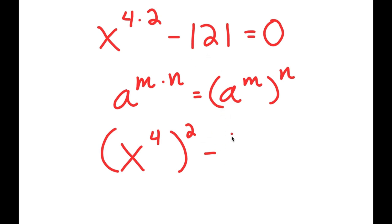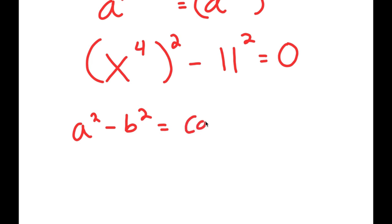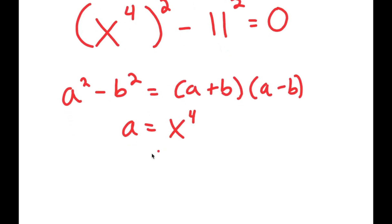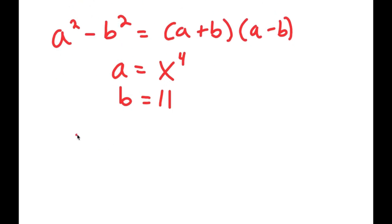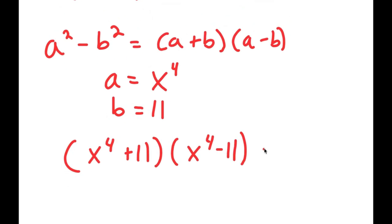Now I have minus 121, which we can rewrite as 11 to the power of 2. We can now use the difference of squares property: a squared minus b squared equals (a plus b)(a minus b). Here a is x to the power of 4 and b is 11, so we get x to the power of 4 plus 11 times x to the power of 4 minus 11 equals 0.